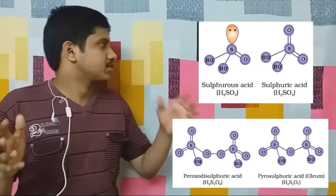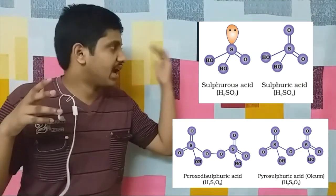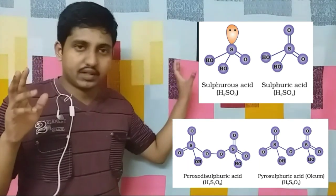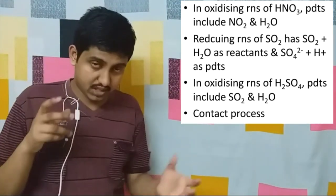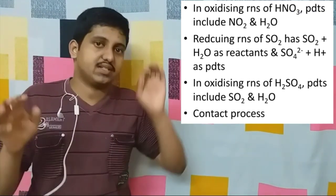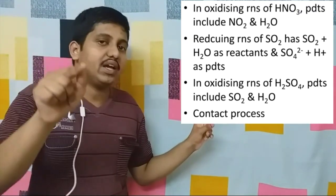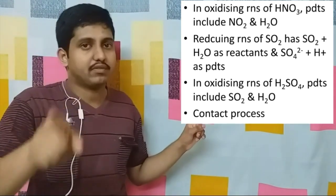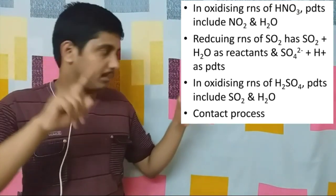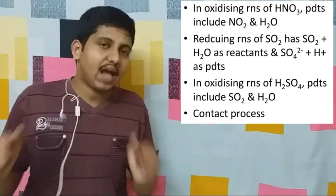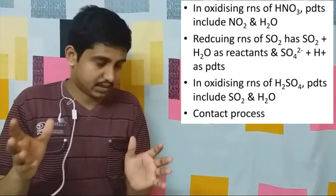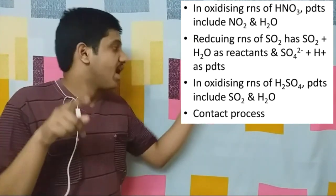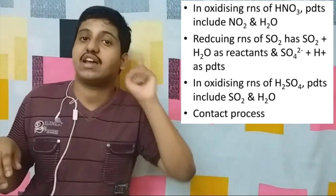Now let's go to sulfur dioxide and the oxo acids of sulfur, which you must study from your textbook. Very important are the structures of the oxo acids of sulfur. Regarding the reactions of sulfuric acid: just as nitric acid's oxidizing reactions give NO2 and H2O, the common reactants in reducing reactions of SO2 are usually SO2 and H2O, and the product is usually sulfate and H⁺. Remember that point very clearly.